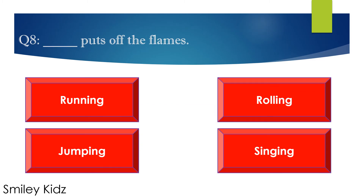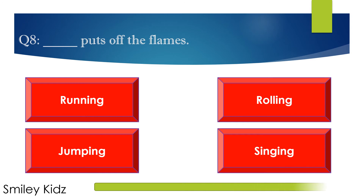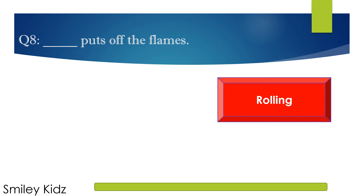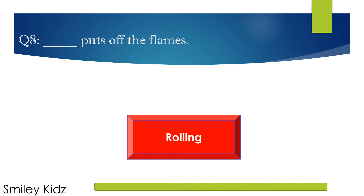Question number 8. Dash puts off the flames. Options are A. Running, B. Rolling, C. Jumping, and D. Singing. Your time starts now. Your time is up. The right answer is rolling. Rolling puts off the flames.